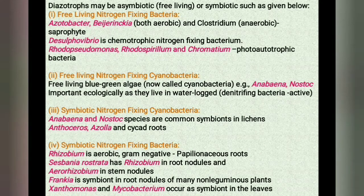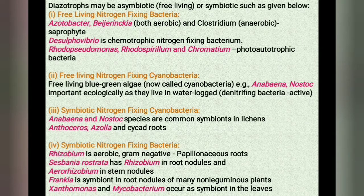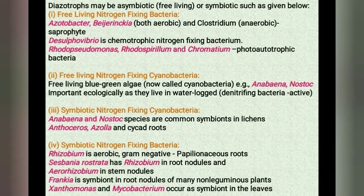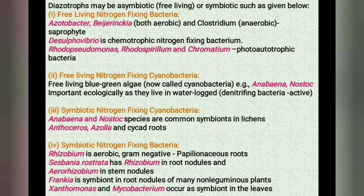The fourth type is the symbiotic nitrogen-fixing bacteria. Rhizobium is an aerobic, gram-negative nitrogen-fixing bacterial symbiont of leguminous roots. Sesbania rostrata has Rhizobium in the root nodules and aero-Rhizobium in the stem nodules. Frankia is a symbiont in the root nodules of non-leguminous plants like Alnus. Xanthomonas and Mycobacterium occur as symbionts in the leaves of some members of the family Rubiaceae.